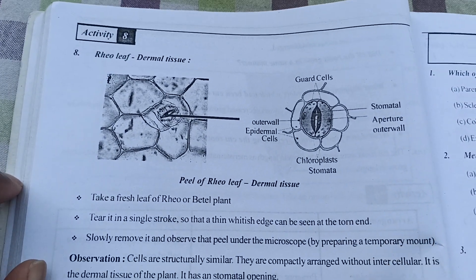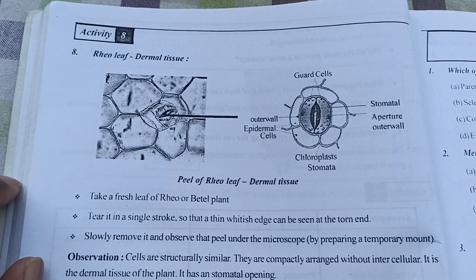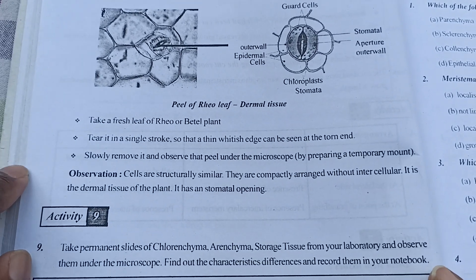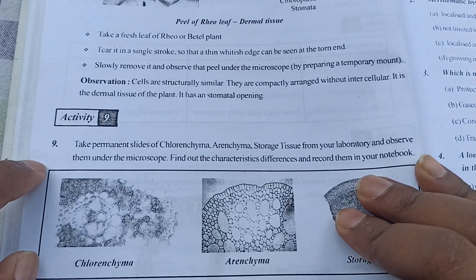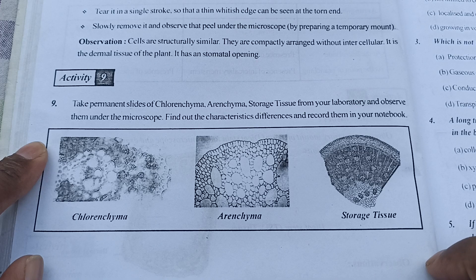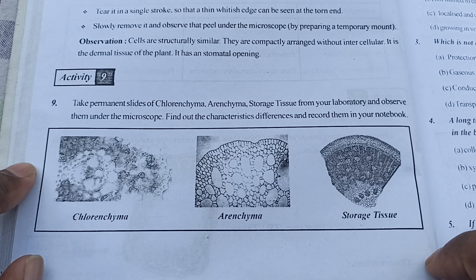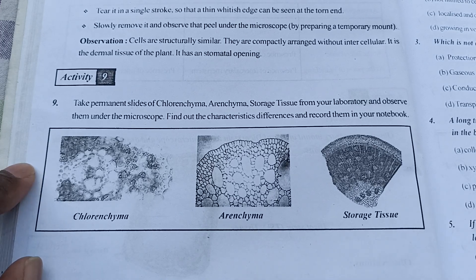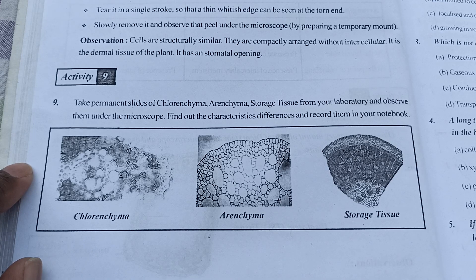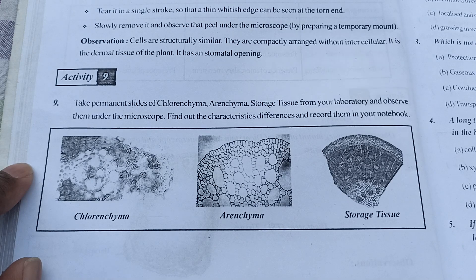Activity eight and activity nine are shown here - activity nine is very easy. Our Chapter 2 Plant Tissue is now totally completed - all question answers have been discussed. In the next video we will talk about Biology Chapter 3 question answers. Thank you for watching, we will meet in the next video. Jai Hind.